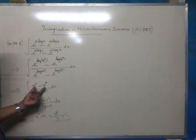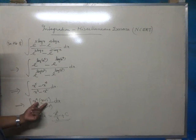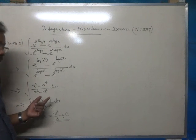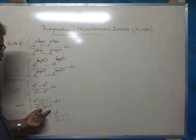Factorizing x raised to 5 minus x raised to 4, we get x raised to 4 into x minus 1. Similarly, factorizing x cube minus x square, we get x square into x minus 1.